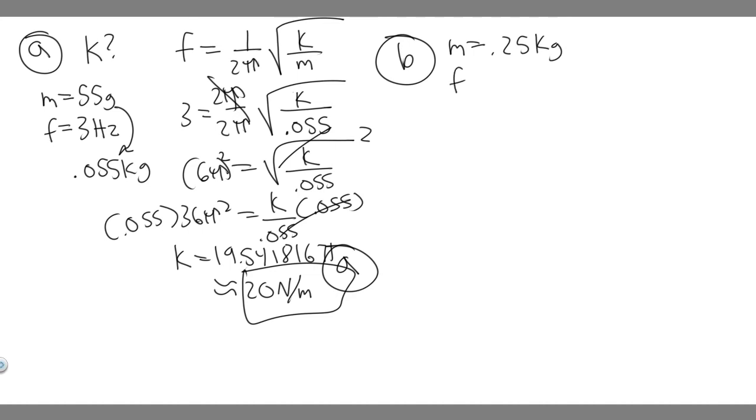For this one, we're trying to solve for the frequency. We're trying to solve for the frequency it would be expected to bob up and down. Notice we're given mass and we're given frequency. But think about what we did on the last problem. We went ahead and solved for the constant k.